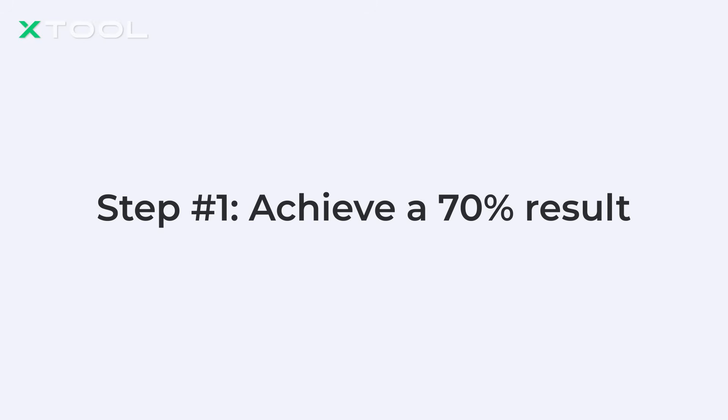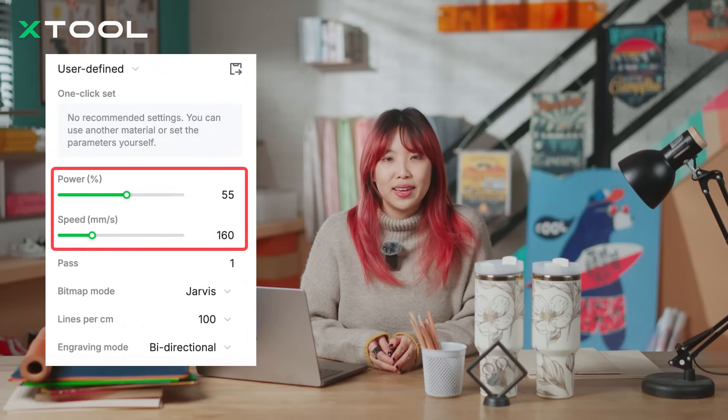Sounds like a lot to think about, right? Don't worry — you don't need to perfect everything at once. Focusing on the essentials first and refining as needed is the key. That's what we call a two-step method for testing. Step one: achieve a 70% result. Forget about everything and just focus on the core parameters — power and speed, or the settings with sliders in XCS — and quickly find a combination that works.